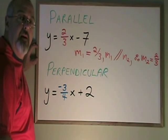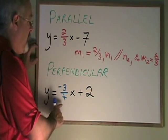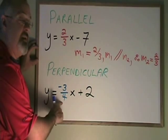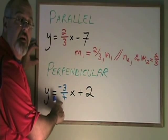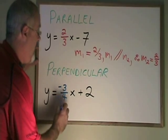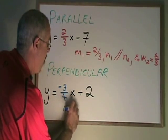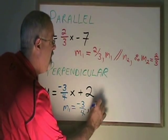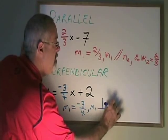With perpendicular lines, it looks very similar. I can see that using y equals mx plus b, the slope of this line is negative 3 quarters. I want to know what the slope is of another line that is perpendicular to this one. I write m1 is equal to negative 3 quarters. m1 is perpendicular to m2.